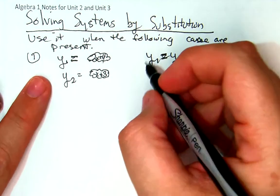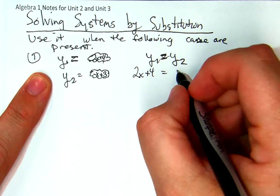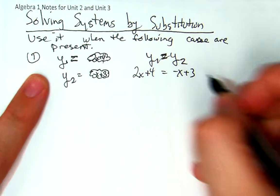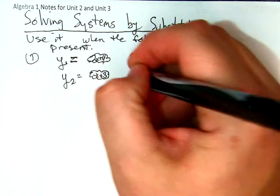You say alright, y1 is 2x plus 4, y2 is negative x plus 3, and you'll set that up. This is basically the first thing that you'll do.